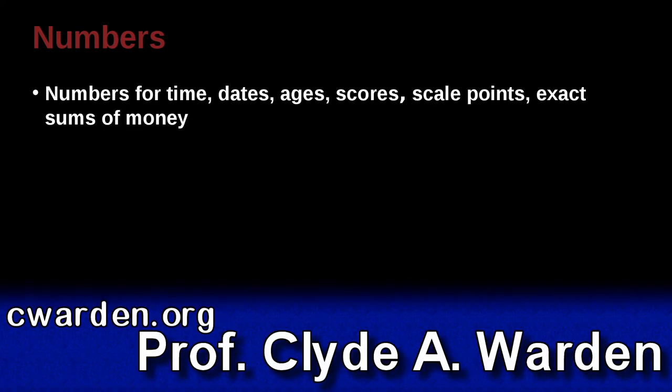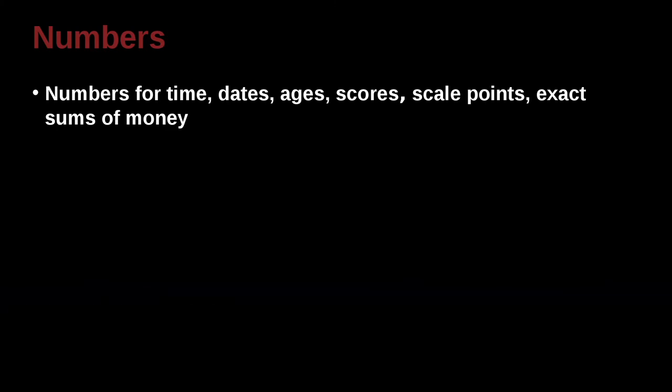Numbers for times, dates, ages, scores, scales, points, and exact sums of money, you should also use the numbers. One hour, 34 minutes, for example, 12:30 a.m., two years old, scored four on a seven-point scale, because that's a scale.